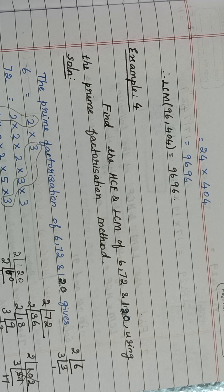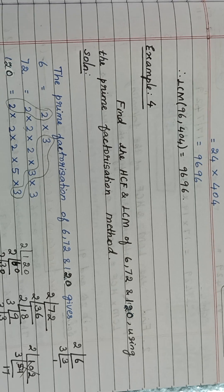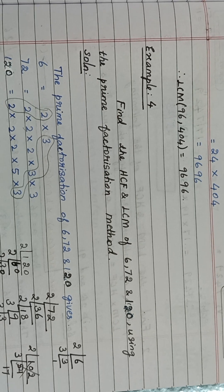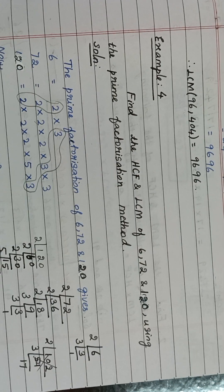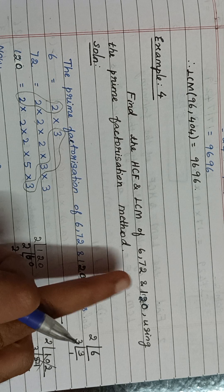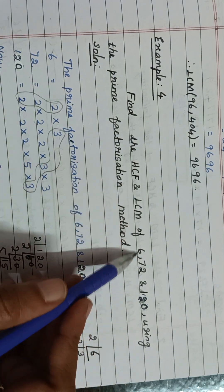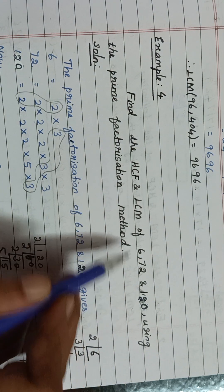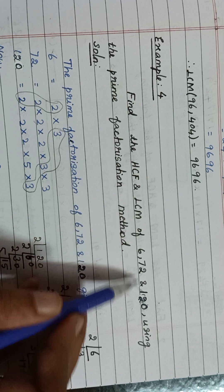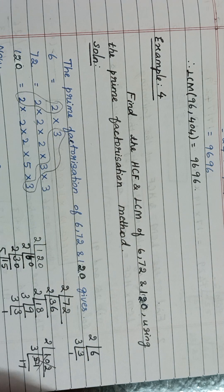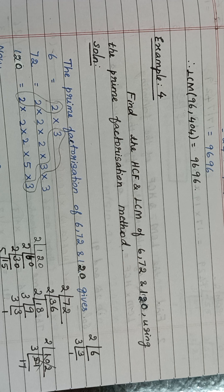Example 4 is also very easy. Here they are given three numbers and asking us to find the HCF and LCM of 6, 72, and 120 using the prime factorization method.